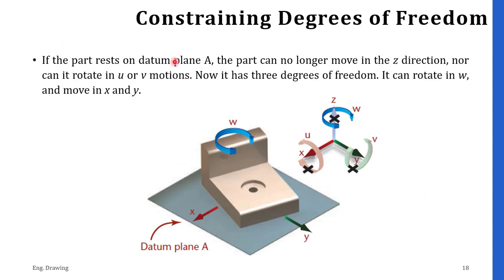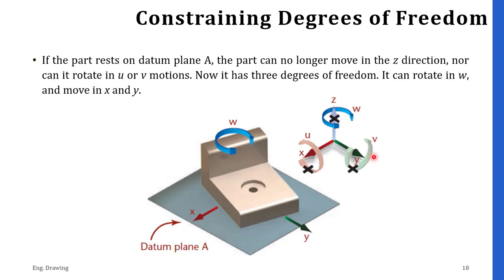If the part rests on datum plane A, the part no longer moves in the Z direction, nor does it rotate in the U and V directions. Now it has three degrees of freedom remaining — it can rotate in W and move in X and Y. When you restrict the part in the Z direction using datum plane A, the part cannot move up and down, and rotation in the U and V directions is also restricted. However, rotation in W and movement in X and Y are still possible.